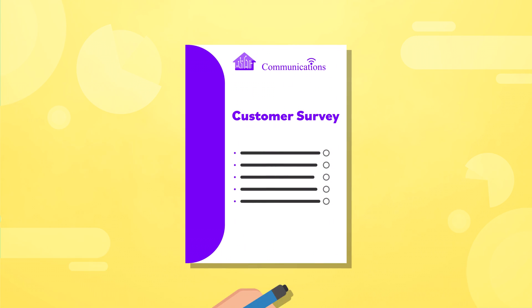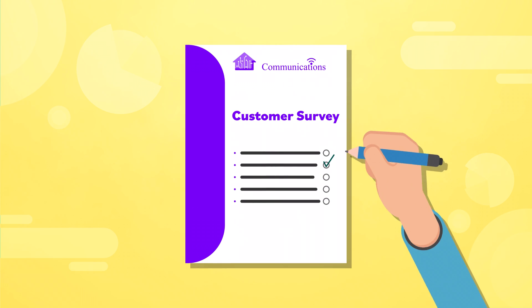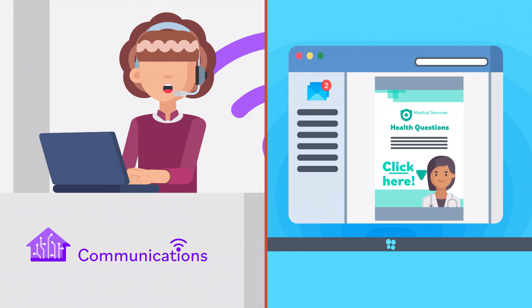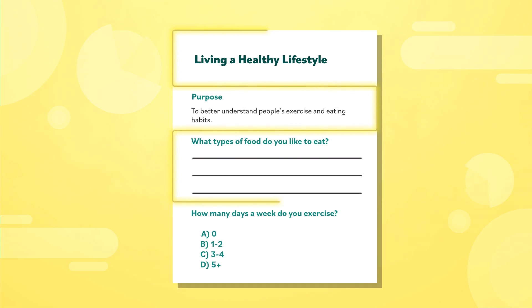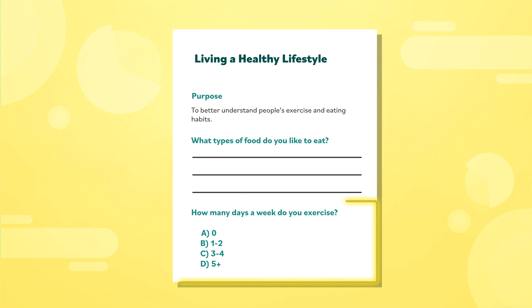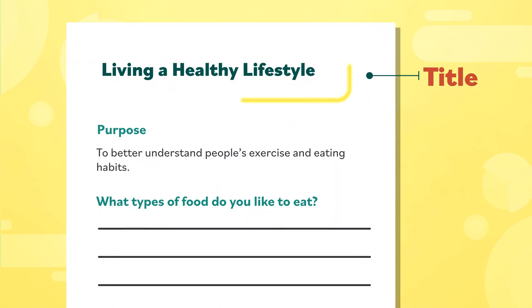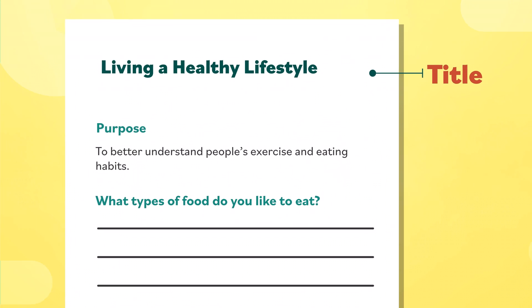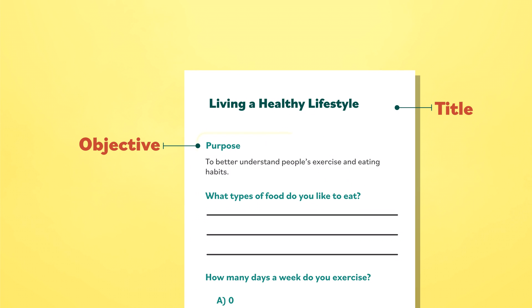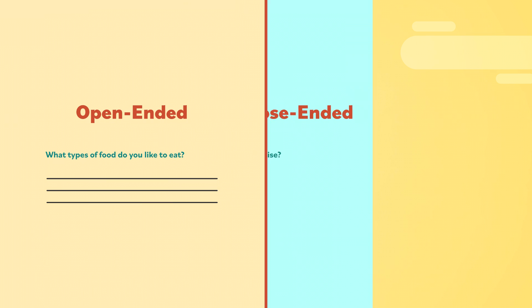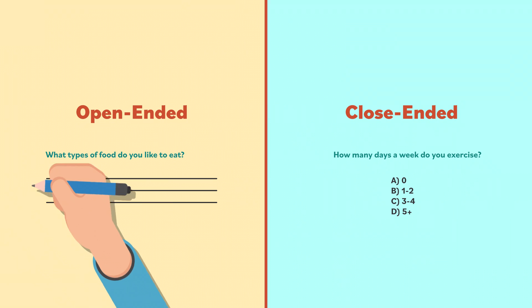Surveys can be filled out by hand, given over the phone, or answered online. In terms of their structure, the title usually appears at the top. This is followed by the introduction or objective, which explains the goals or purpose of the survey. Then there are the questions, which are referred to as either open or closed.